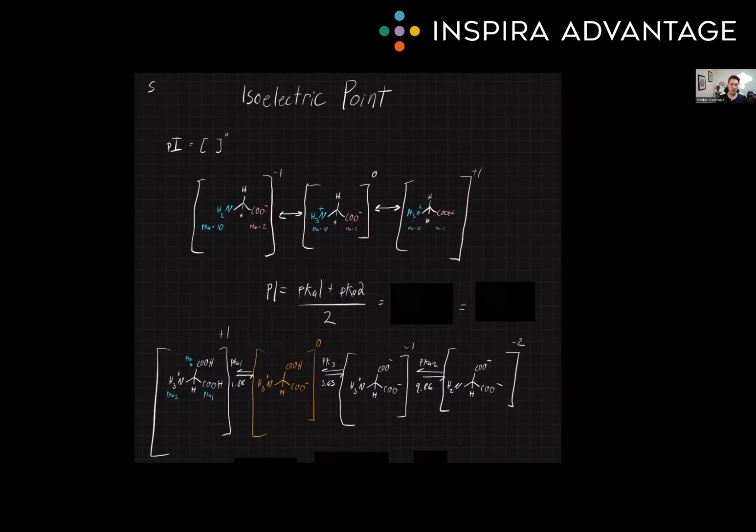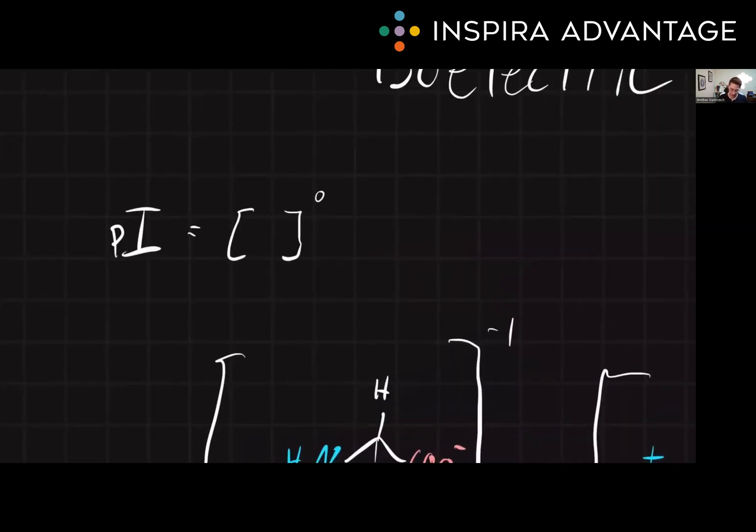The isoelectric point, or pI as it's commonly written, is the pH at which a molecule has a net charge of zero. This is important in biochemistry because the charge of a molecule can affect how it interacts with other molecules.